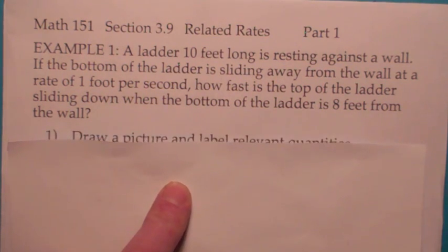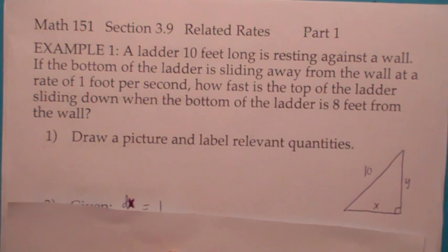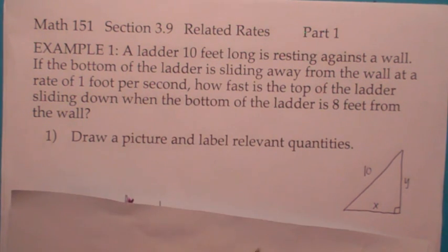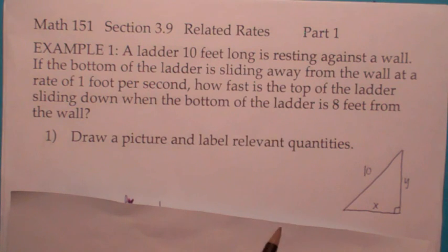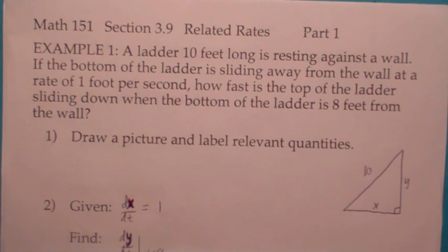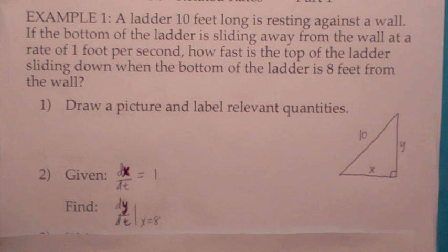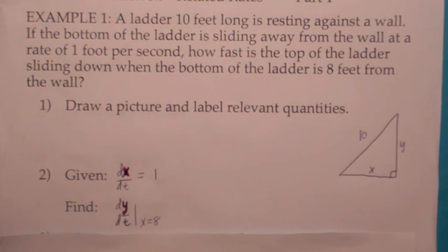The first step we're going to do in all these problems is draw a picture and label the relevant quantities. Let's call x the distance from the base of the ladder to the wall, and y the distance from the top of the ladder to the ground. The second step: state what's given and what they want you to find. Here they're giving you that x is increasing, so dx/dt is positive 1, and they want you to find dy/dt when x equals 8.